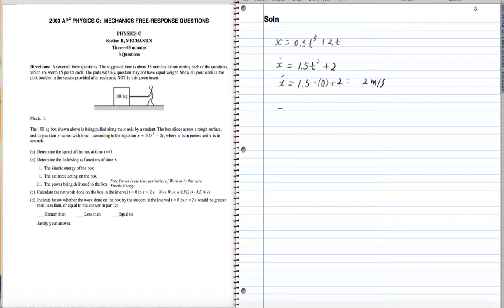Now for part b, we want to determine the kinetic energy as a function of time. So I know the speed is 1.5 t squared plus 2. So I have that the mass of the box is 100 kilograms. So the kinetic energy as a function of time is simply going to be the formula one-half m v squared, or in this case x dot. So that's going to give me 50, because one-half times 100 is 50, times 1.5 t squared plus 2, quantity squared.